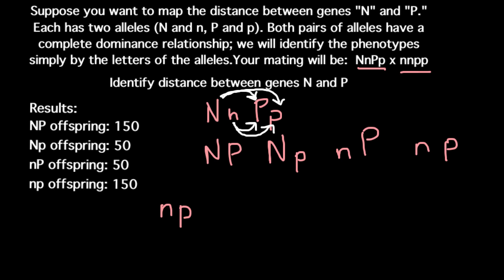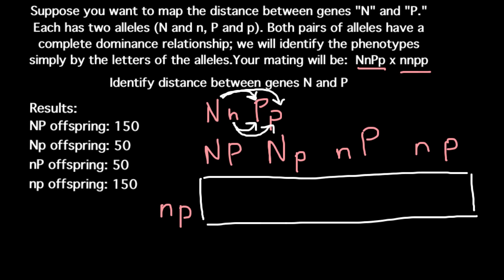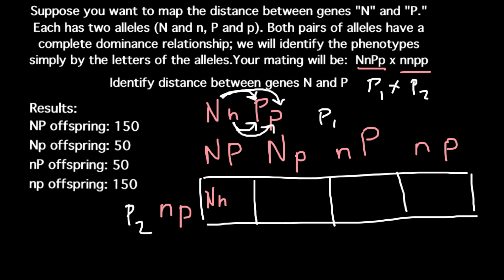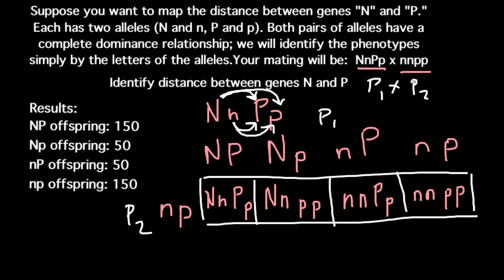If we build a Punnett square and find what genotypes are possible when we cross these four gamete types produced by parent 1 with parent 2 — here we have parent 1 and parent 2. The genotypes would be as follows: capital N, small n and capital P, small p; capital N, small n and small p, small p; small n, small n and capital P, small p; and small n, small n and small p, small p.